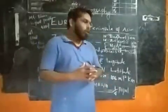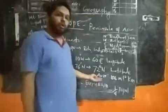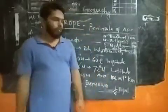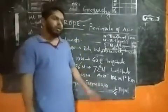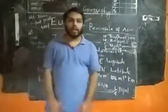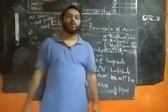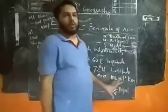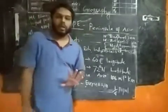The area of Europe is 10.4 million square kilometers. When we take the whole population of the world, one quarter of that population can be found in Europe. I hope you understood these basic things about Europe.